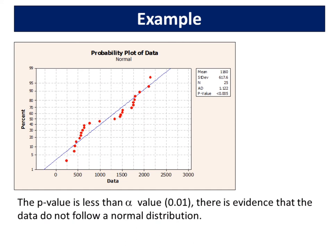For non-normal distribution, the p-value is less than alpha value 0.01. There is evidence that the data do not follow a normal distribution.